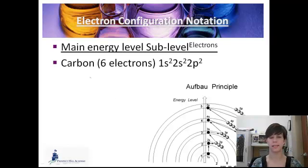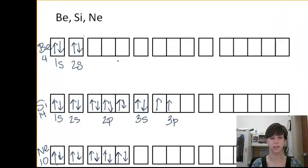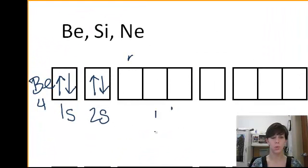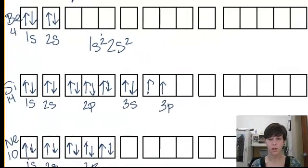So carbon, for example, has six electrons. The first two go in 1s, the second two go in 2s, and the last two go in 2p. And we're going to do it for beryllium, silicon, and neon, since we already did all the hard work here. So 1s for beryllium, we have two electrons. There they are, one, two. And then in the 2s, we have two. So that's the electron configuration notation. It's much faster to write.